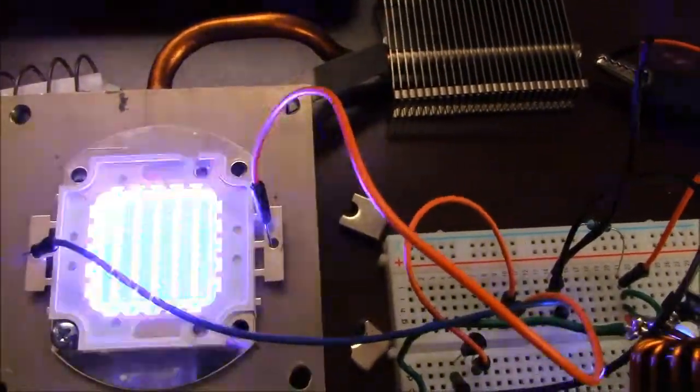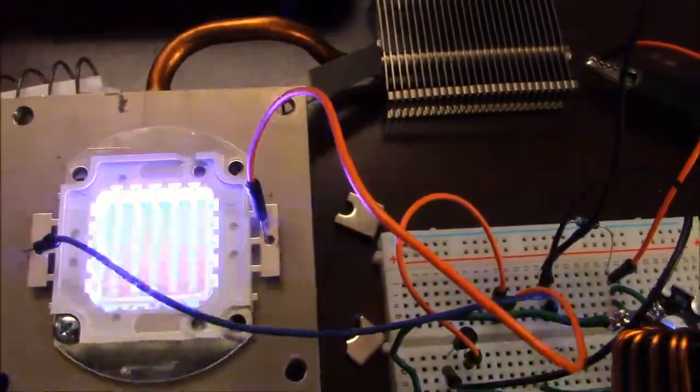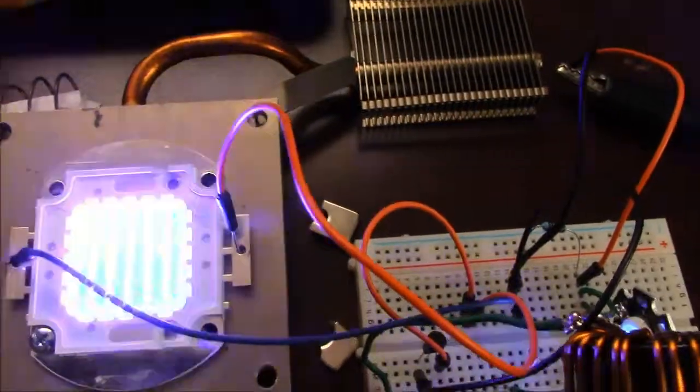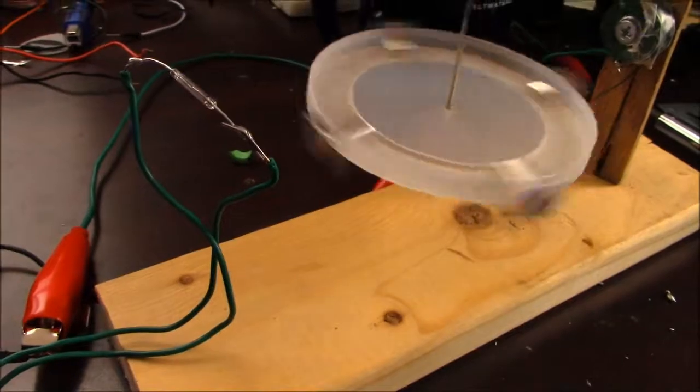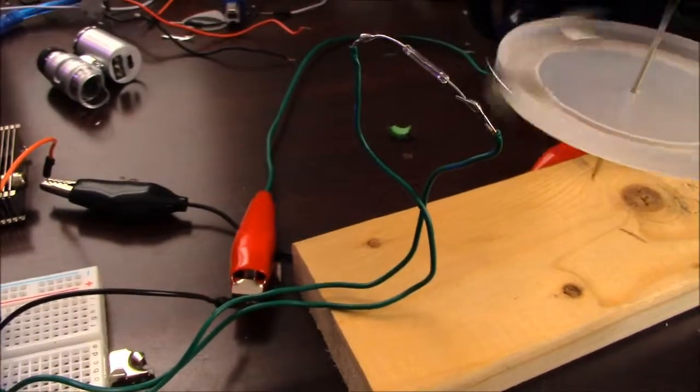So why it's turning on with such a low voltage with this joule thief, I'm still unsure. I'm sure it has something to do with the frequency. But obviously you see the pulsing, and that's from the flyback from the circuit switching off.